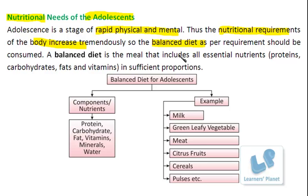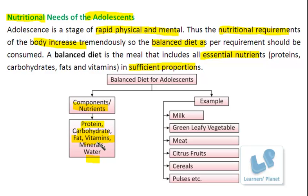Whatever food we eat should include a balanced diet — a meal in which different essential nutrients are present in sufficient proportions, supporting the growth of an individual. A balanced diet includes protein, carbohydrate, fat, vitamins, minerals, water, and so on. At this age, since growth is taking place, more protein is required compared to carbohydrate or fat, so the diet should be rich in proteins.